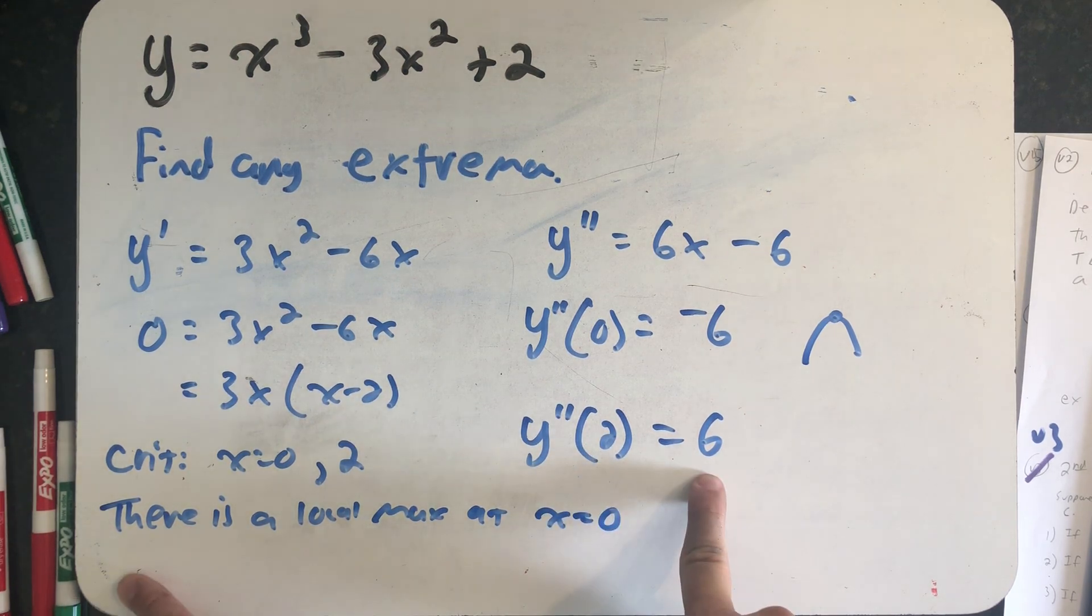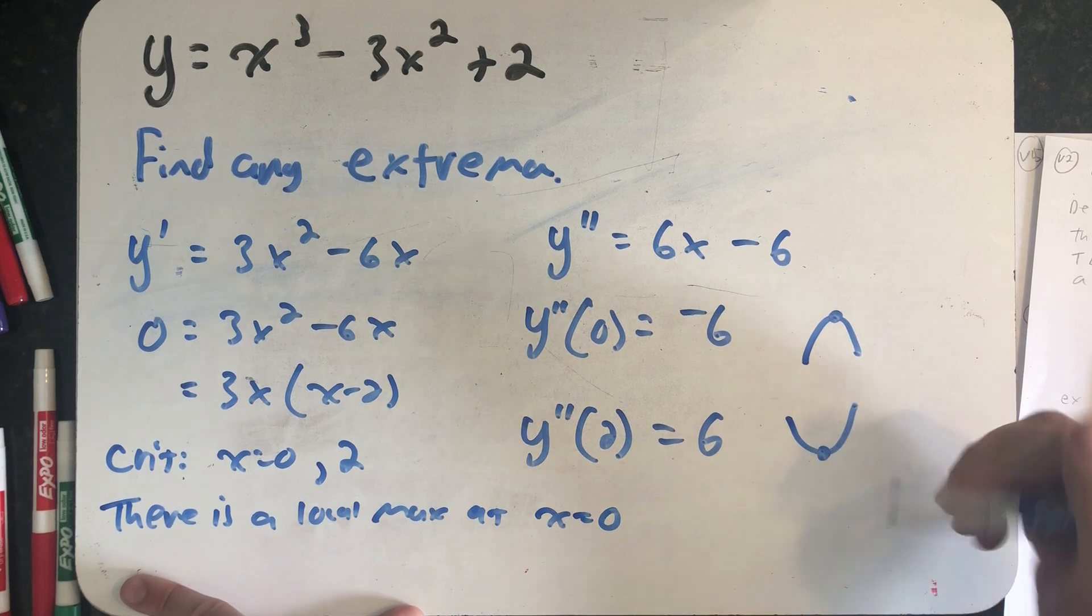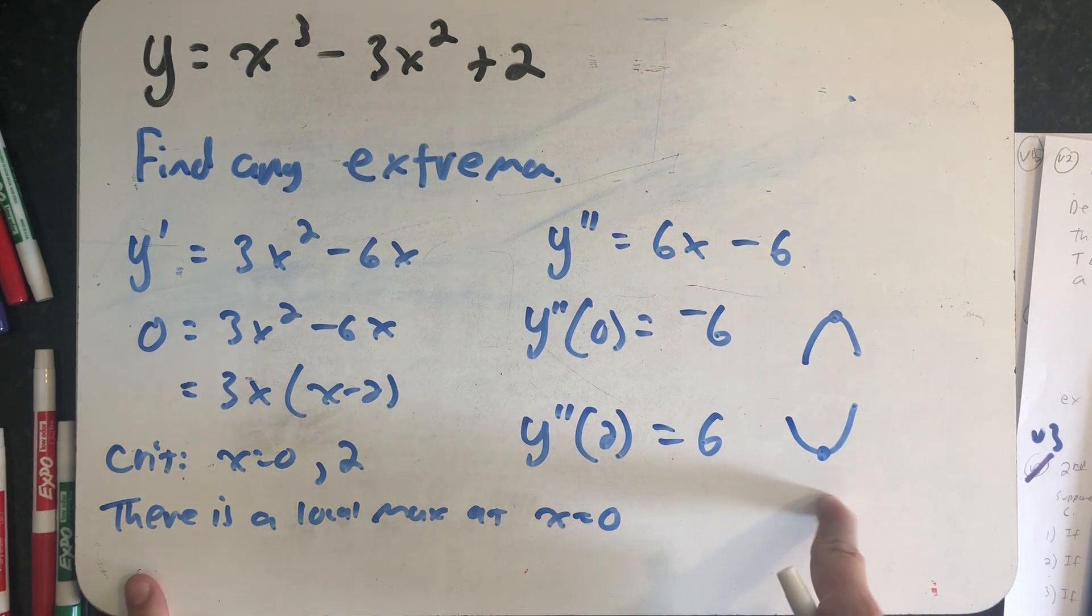And x = 2, the second derivative is positive, which means there's a concave upward shape, which means there's a local minimum.